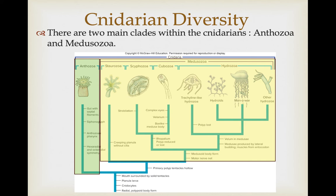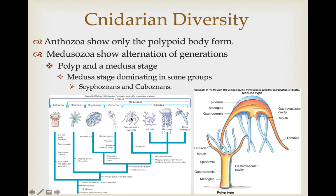There are two main clades within the Cnidarians: the anthozoans and the medusazoa. The anthozoa is the earliest branch coming off of the phylogeny. The medusazoa is the more morphologically diverse group. The anthozoans are the earliest group and have not evolved a medusoid body form. Most Cnidarians have both a polyp and a medusa stage. The medusazoans do have both stages, and the medusa stage dominates in some of these groups.